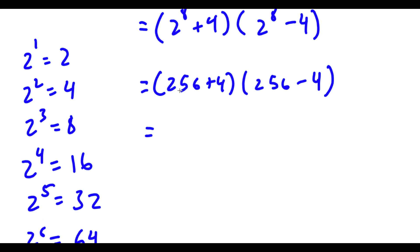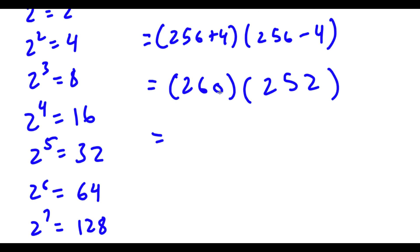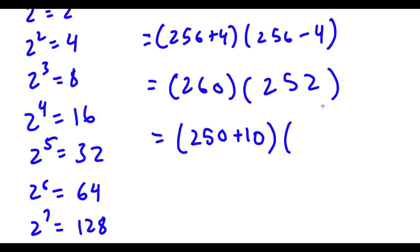Now 256 plus 4 is 260, and 256 minus 4 is 252, so I have 260 times 252. I'm going to rewrite both terms: 260 as 250 plus 10, and 252 as 250 plus 2.